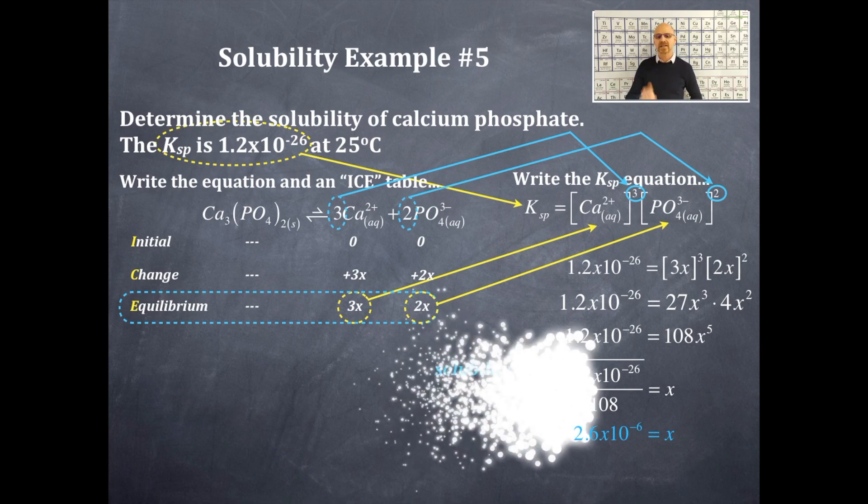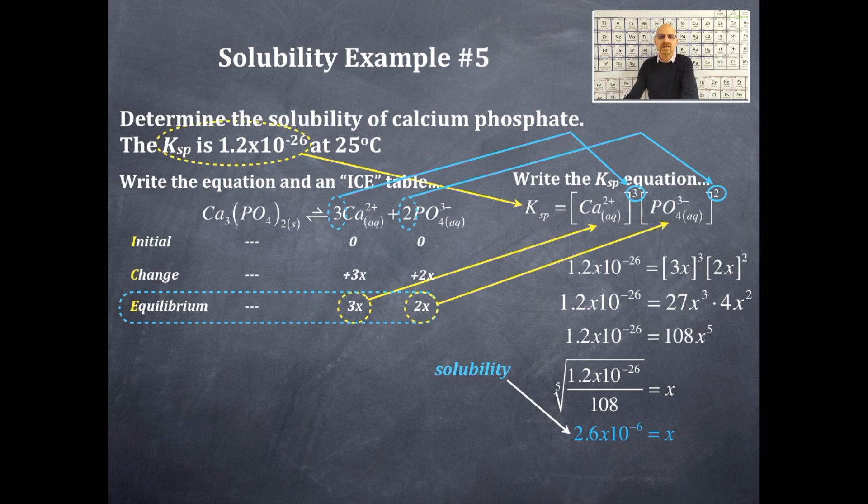This is equal to the solubility. Whatever x is equal to, that's the solubility. So I've just determined the solubility in moles per liter. Now I also want to get the calcium ion concentration in moles per liter and the phosphate ion concentration in moles per liter. Okay so let's do that.